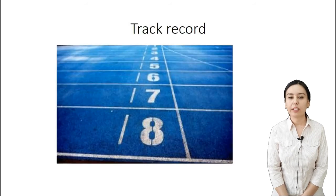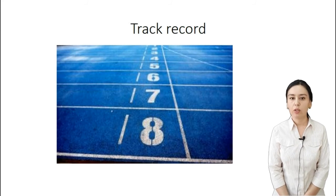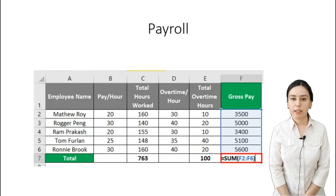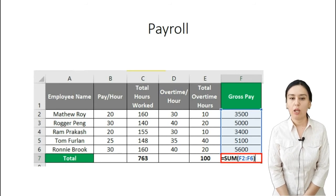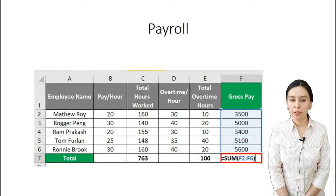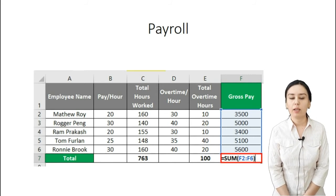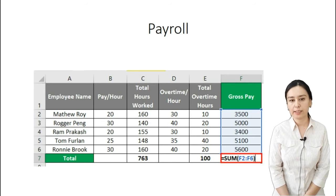Next: track record. A track record is the experience of a person who has worked in one sphere. It's very important when you apply for a new job, as they usually ask for your track record. Next: payroll. A payroll is a document where the names of employees and how many hours they worked are recorded. According to this document, they can receive their salary or wage.